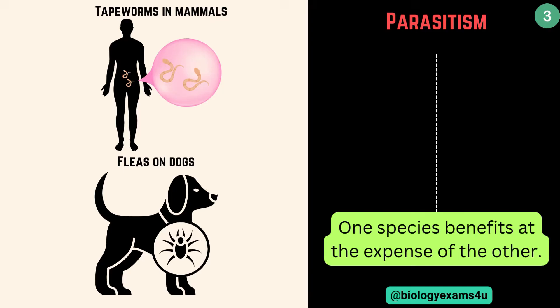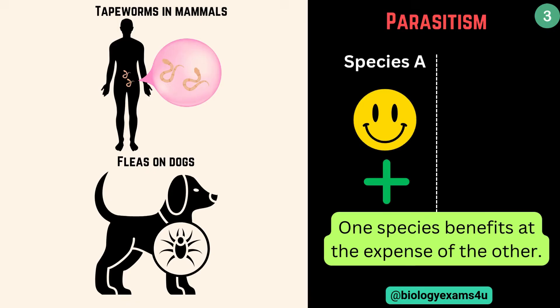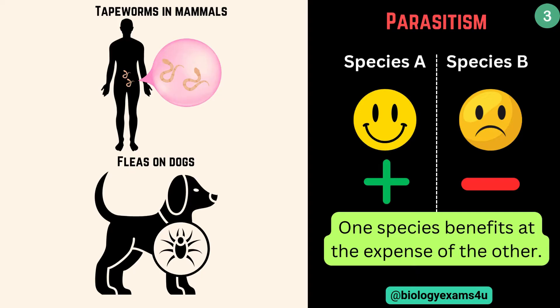As you can see, species A is benefited — positive sign — whereas species B is affected or harmed. Therefore, let us give this a negative or minus sign.